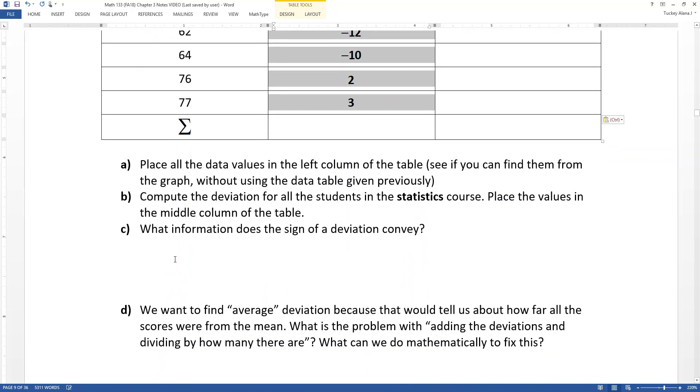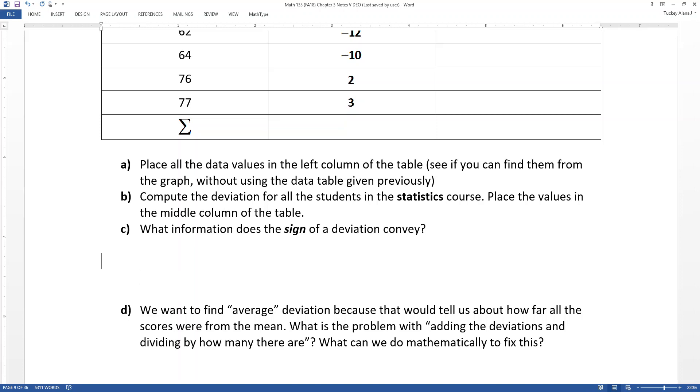We've learned some lessons. What does the sign of the deviation convey? The sign conveys whether the data point is above or below the mean. If your data point's above the mean you're going to have a positive deviation. If the data point is below the mean you're going to have a negative deviation. That's pretty obvious.